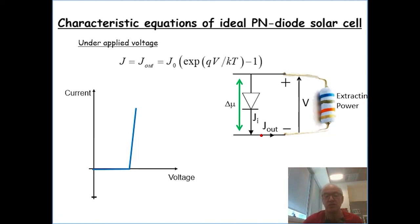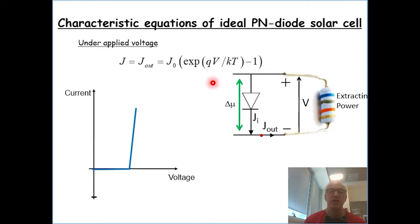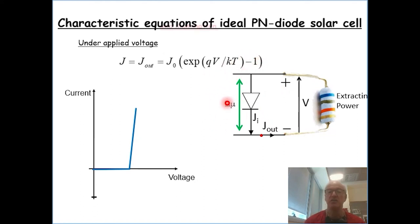So back to the equivalent circuits that I promised we'd finish with. So again, we have the ideal PN diode, this is the ideal JV curve, and the equivalent circuit. The next thing we do is we want to add light to the equation.